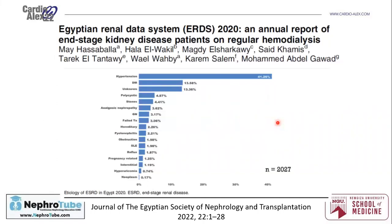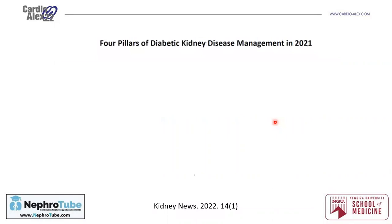Starting the lecture with registry data from Egypt for end-stage renal kidney disease in 2020: hypertension and diabetes mellitus are the most common causes and etiologies for end-stage renal disease. That's why there is a lot of focus on the management of diabetic kidney disease, and we are trying to find better management and better control for the progression of this disease.